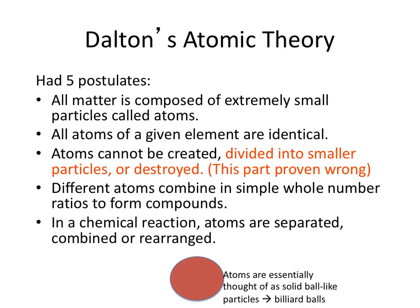The first model was Dalton's model. Dalton had five postulates: all matter is composed of extremely small particles called atoms; all atoms of a given element are identical; atoms cannot be created, divided into smaller particles, or destroyed — that last part was eventually proven wrong; they combine in simple whole number ratios to form compounds; and in a chemical reaction they are separated, combined, or rearranged. Essentially, Dalton thought of the atom as just a circle, like a billiard ball.